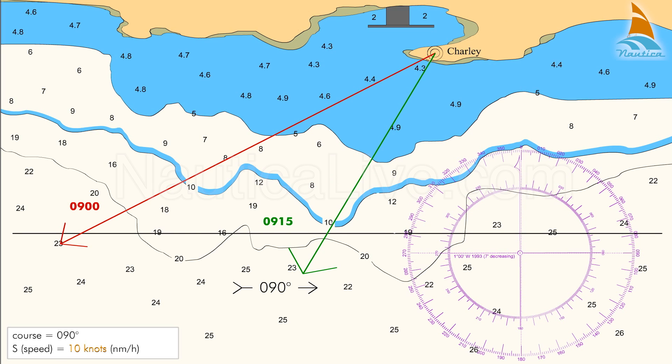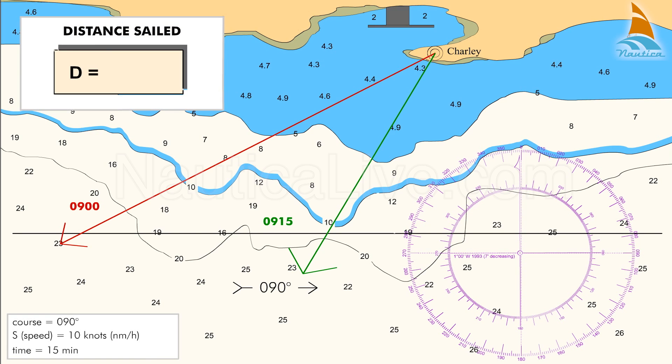Knowing the speed, 10 knots, and the elapsed time between the two bearings, 15 minutes, we use the formula D is equal to S times T divided by 60 to calculate the sailing distance between the two bearings.